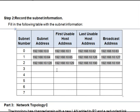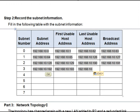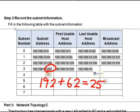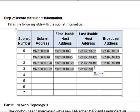For the last subnet, subnet 3 starts at 192.168.10.192 and the first host address is 192.168.10.193. To find the last usable host, we take 192 plus 62, which gives us 254. So the last usable host is 192.168.10.254, and the broadcast address is 192.168.10.255. This completes the addressing table for question number two.